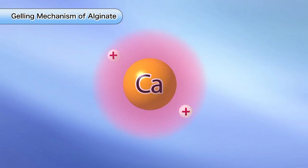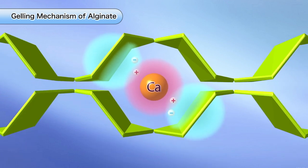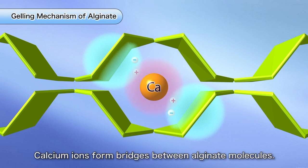When calcium ions are added, the negatively charged alginate molecules attract the positively charged calcium ions, forming a salt. When a further positive charge creates a salt with another alginate molecule, the two alginate molecules become linked by a calcium ion.